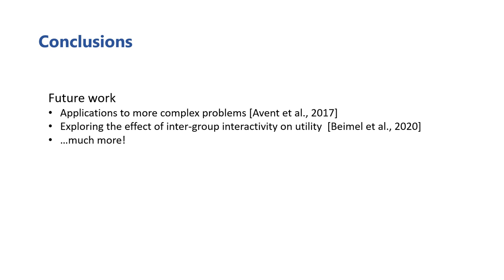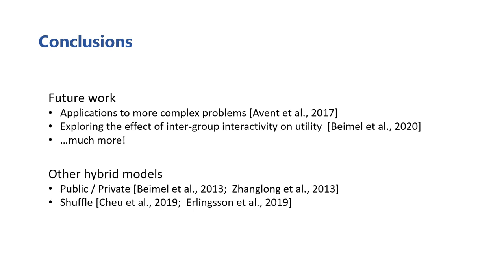However, all of these aspects, and others, are far from being fully answered. Moreover, other types of hybrid models have been gaining traction in the differential privacy community. One is a public-private model, where most users are guaranteed differential privacy for their data, but some users are willing to contribute their data with no privacy protections at all.